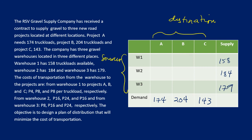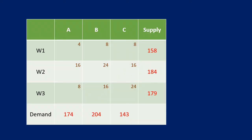The company has three warehouses with supplies of 158, 184, and 179 respectively. The costs are: from Warehouse 1 to projects A, B, and C: 4, 8, and 8. From Warehouse 2: 16, 24, and 16. From Warehouse 3: 8, 16, and 24. This is our table. For step 1, we use the Northwest Corner Rule.